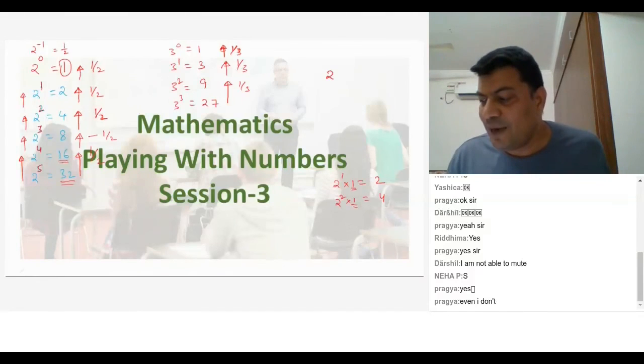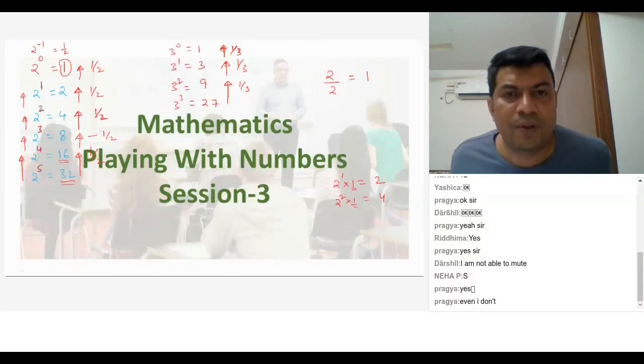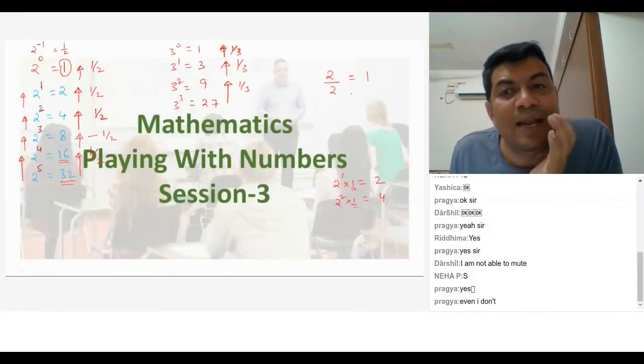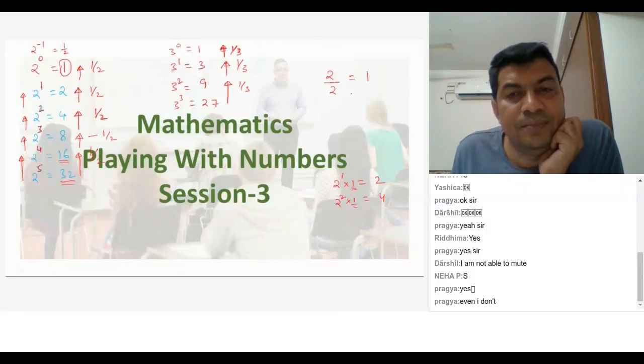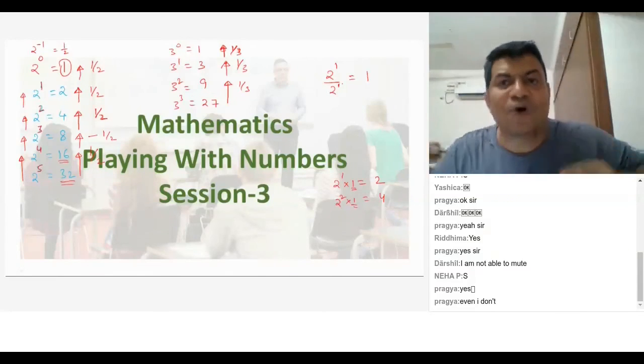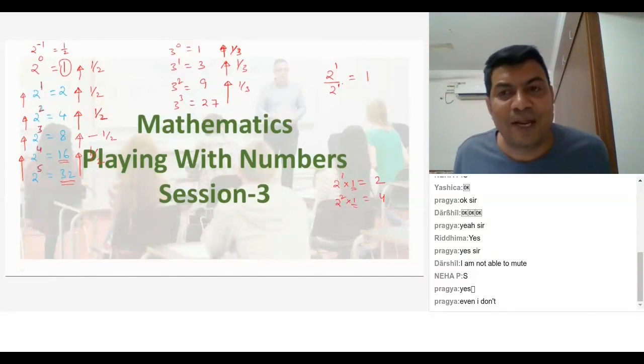Now, do you know 2 divided by 2? What do you mean by 2 divided by 2? 2 divided by 2 is 1. Very good. My question is, what is 2 divided by 2? 1. So basically, it's nothing but 2 to the power of 1 by 2 to the power of 1. That's the meaning of 2 divided by 2.